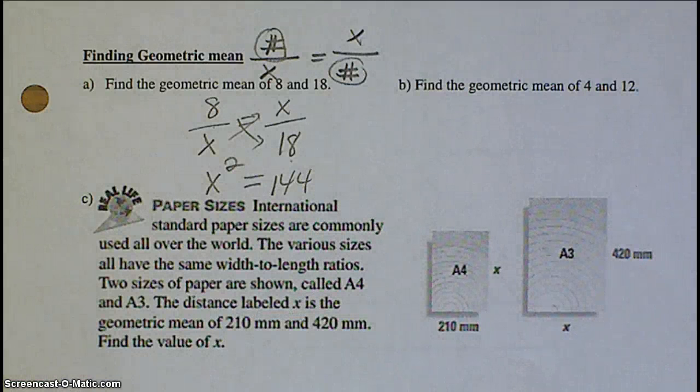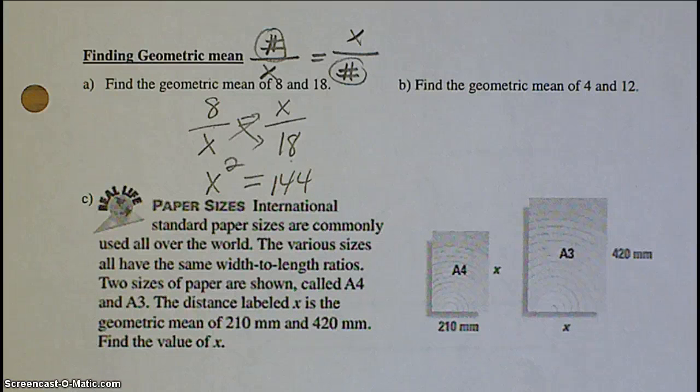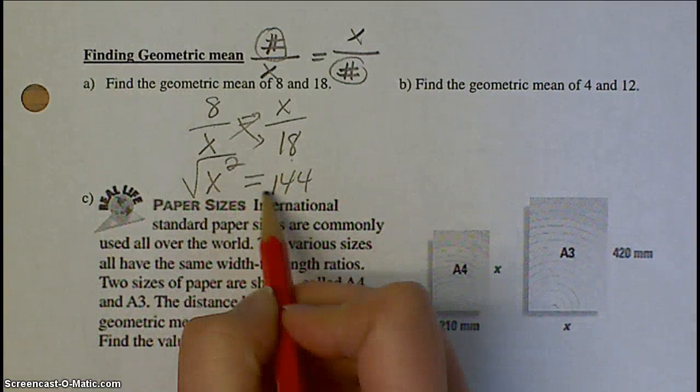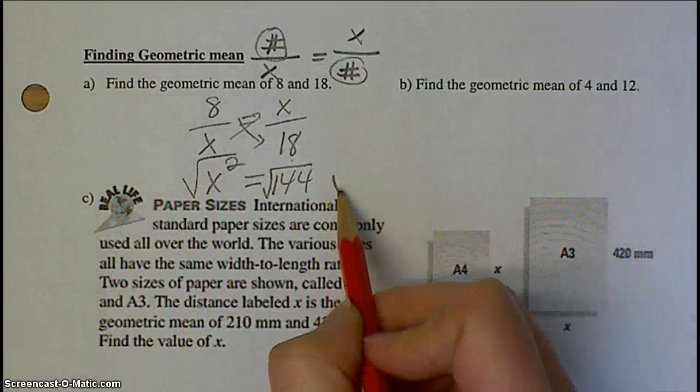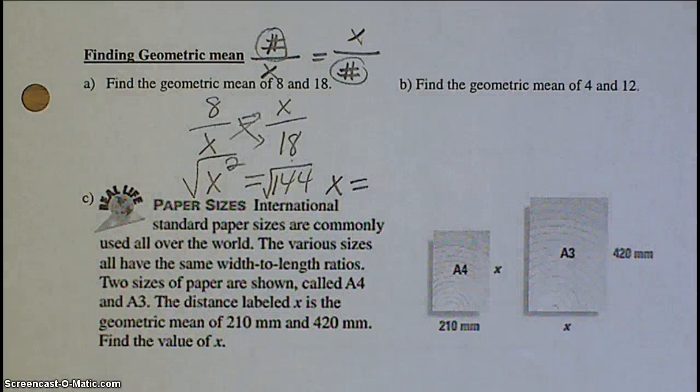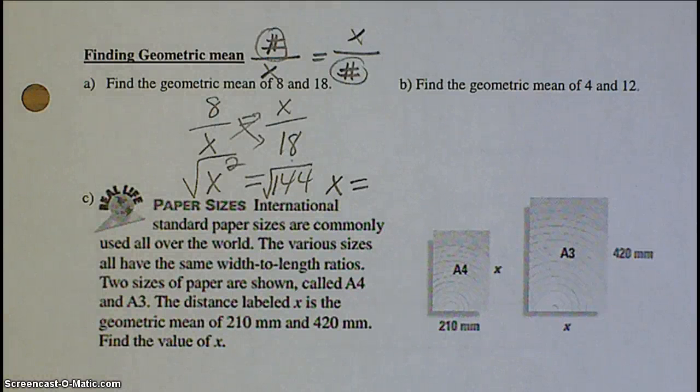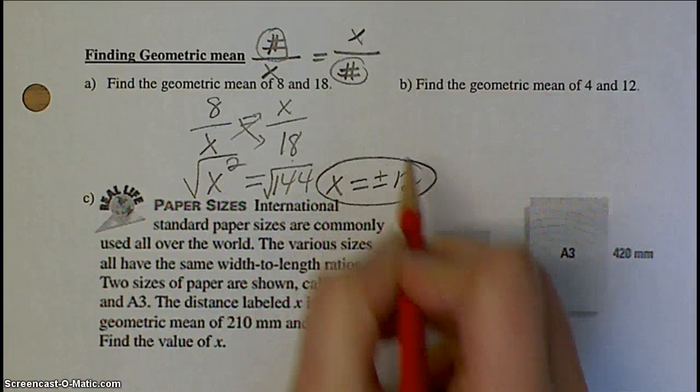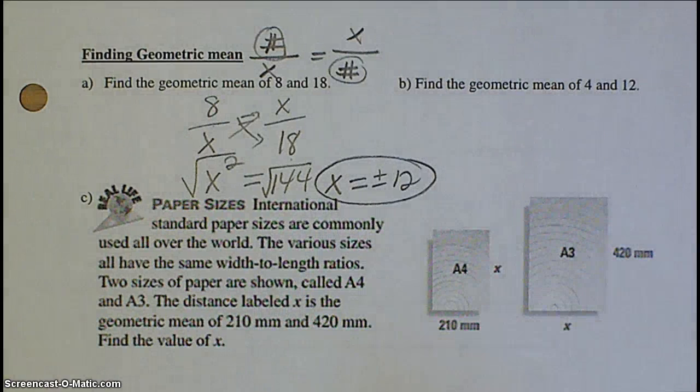Now, just like we did yesterday, and just like you do all the time with Pythagorean theorem, to get rid of an exponent, you have to do the root. So square root. But we said sometimes when you do the square root, your answer could be positive or it could be negative. So the way you represent that is with a plus or minus.